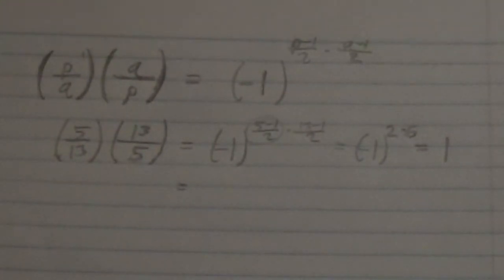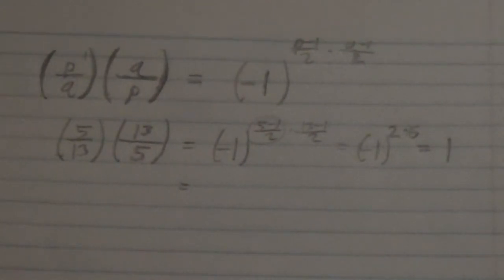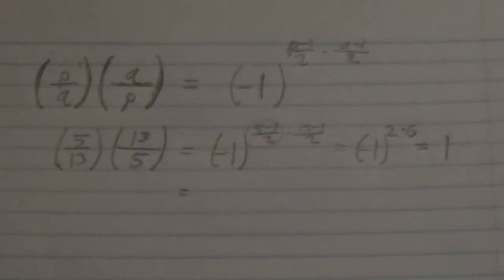And let us also recall for a moment that p on q, this Legendre notation, returns 1 only if p is a quadratic residue modulo q.